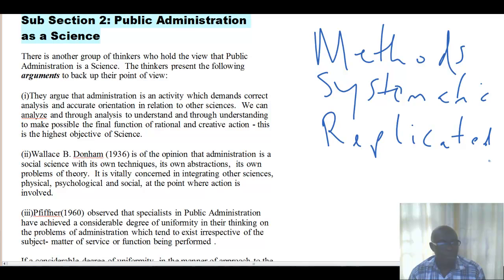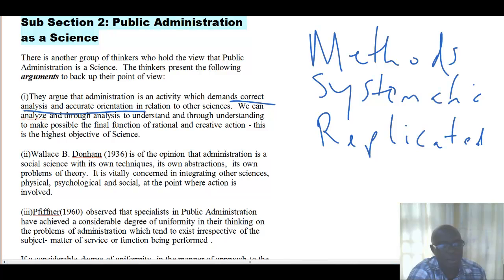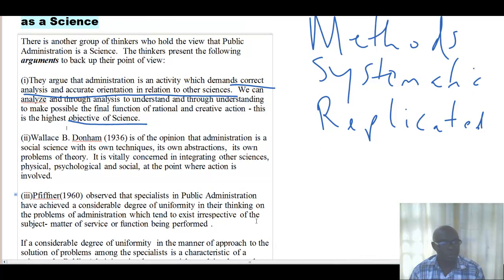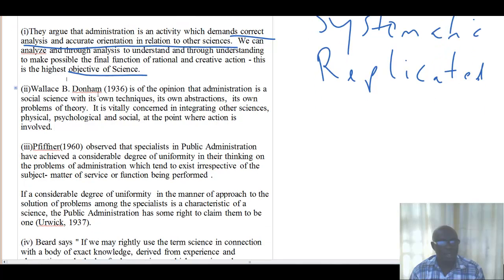What are these arguments? Number one, it is argued that public administration is an activity that demands correct analysis and accurate orientation in relation to other sciences. We can analyze, and through our analysis we come to understand and make final decisions based on a rational process. This is the highest objective of science — that the process should be systematic and can be replicated. If we can gather data, analyze it, and make rational decisions as the sciences do, then we can argue that public administration is a science.